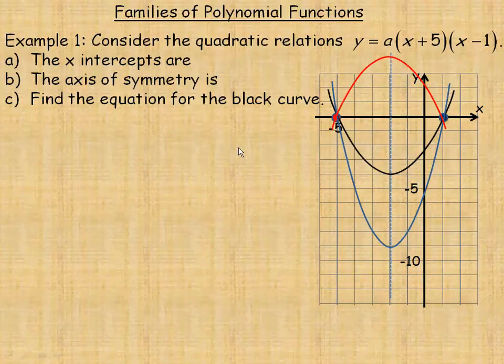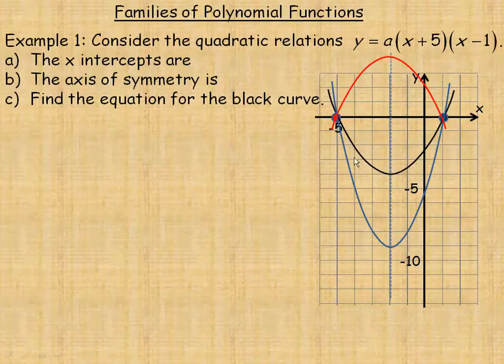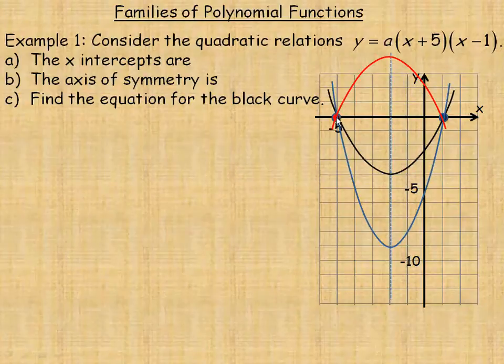In this lesson, we'll take a look at families of polynomial functions. In the example on this page, there's three parabolas drawn here, and they all have an x-intercept of negative 5 and an x-intercept of positive 1.